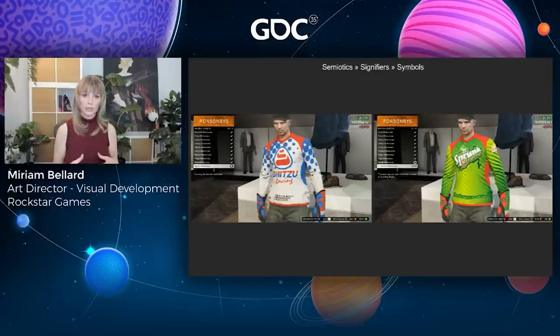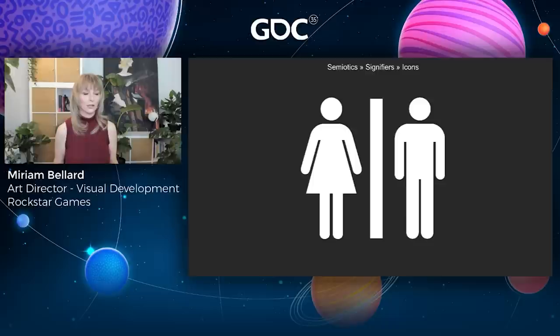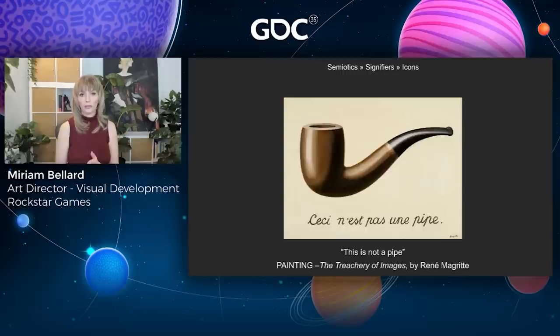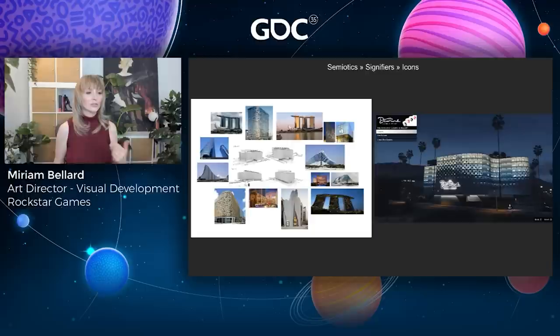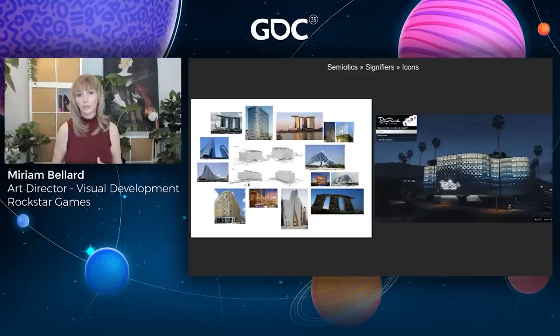An icon signifier is a signifier that physically resembles what it is signifying — like male and female icons, and of course Magritte's painting, which was an icon signifier of the pipe. Icon signifiers would be the most common type in-game. Here, we looked at what modern contemporary casinos and hotels look like and applied that knowledge to the design of this building, so it simply looks like a modern casino.